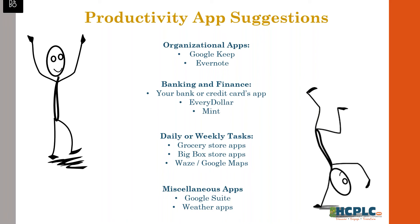For daily or weekly tasks, grocery store and big box store apps are very useful. The Publix app, for example — I like to shop based on what's on sale, and the Publix app makes that easy. You can look at the weekly ads, add items to your list, and when you go to Publix, you just look at your list. It even tells you what aisle an item is in — it makes grocery shopping very, very simple.